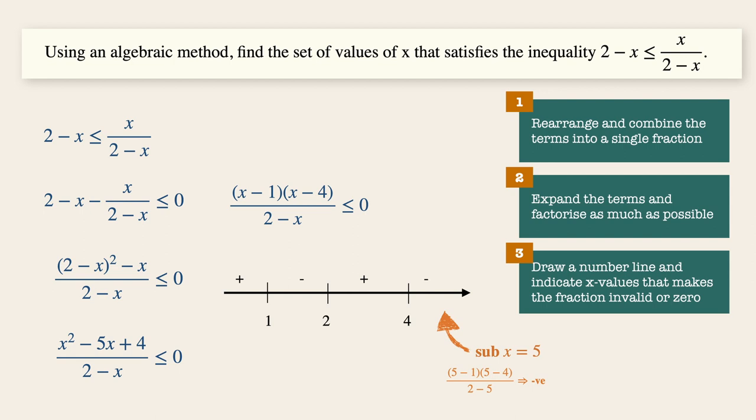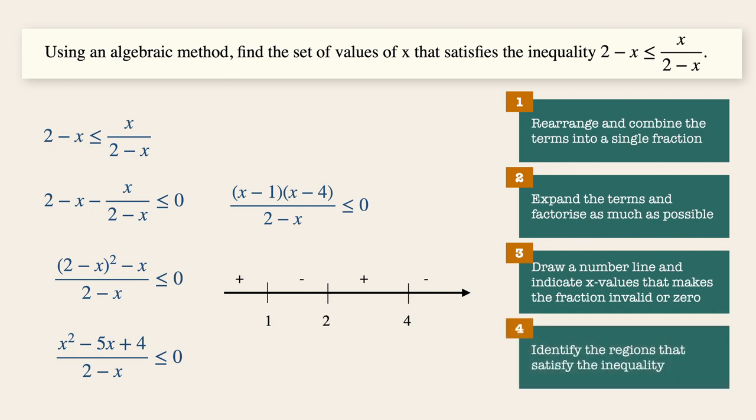Now with this information, we come to step number four, simply identify the regions that satisfy this inequality. Now we look for negative ones, as this is less than equals to zero. So the regions are between one and two, and more than four.